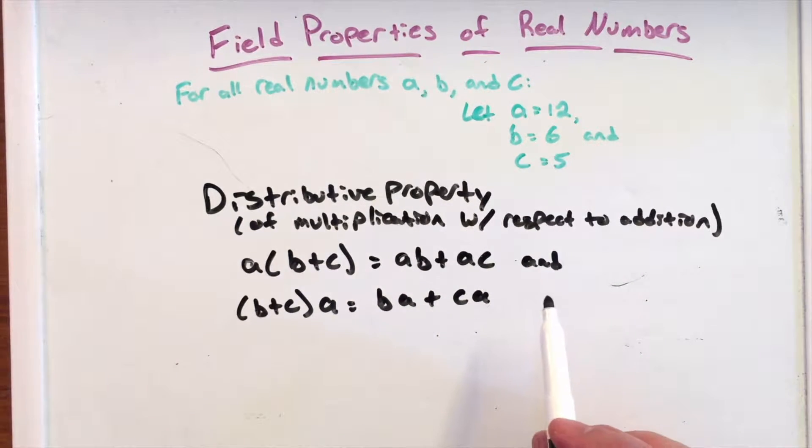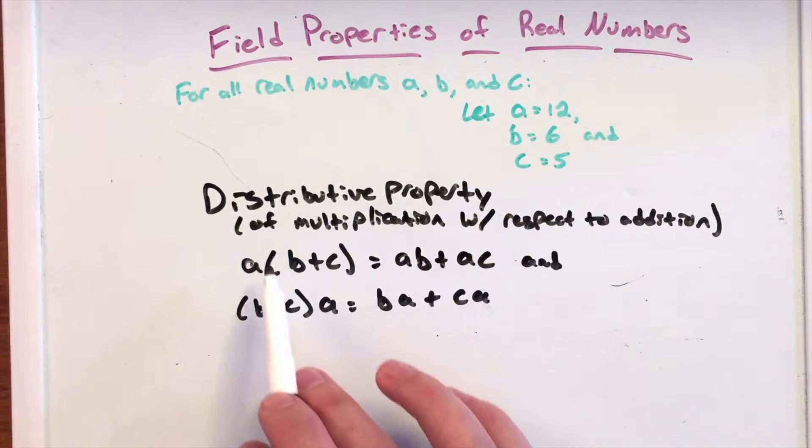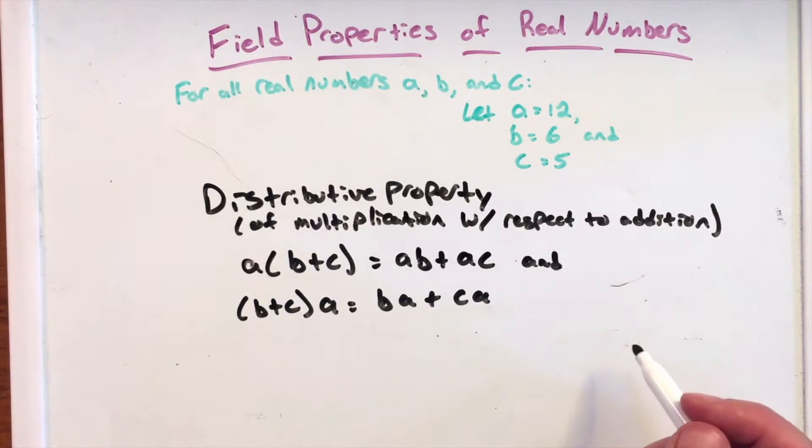Of course, we talked about the commutative property where B times A is the same thing as A times B. So these two are actually equal, and it doesn't matter which side it's on, but we distribute that multiplication to both parts.